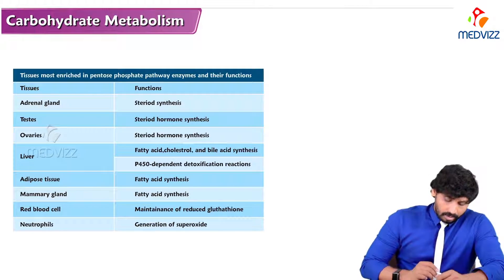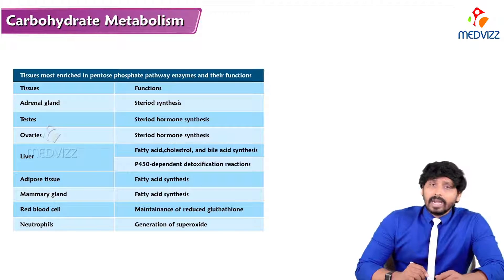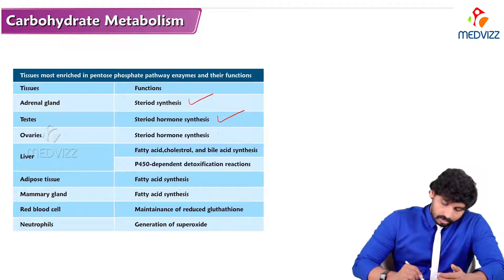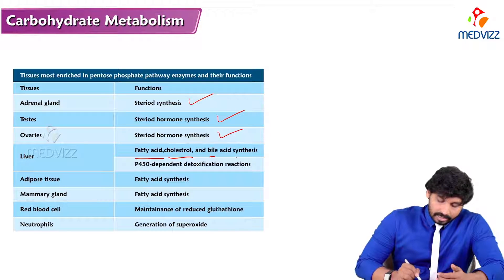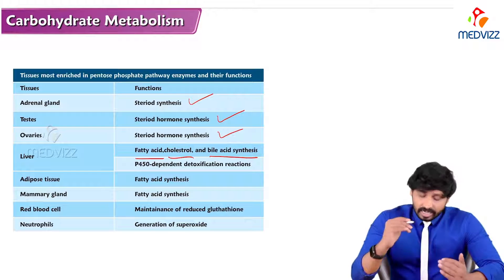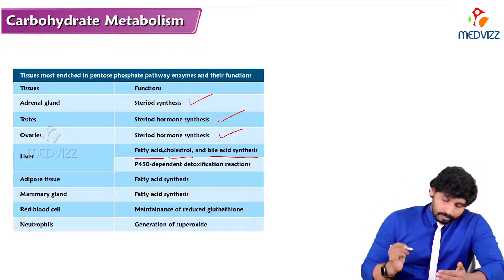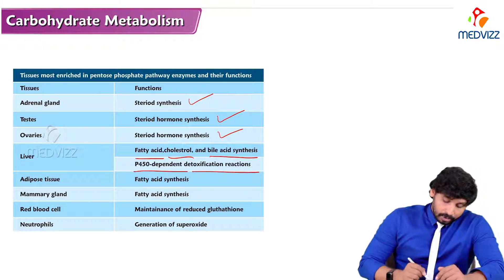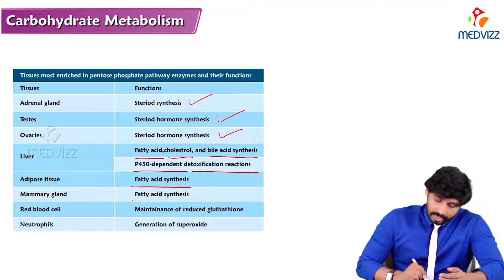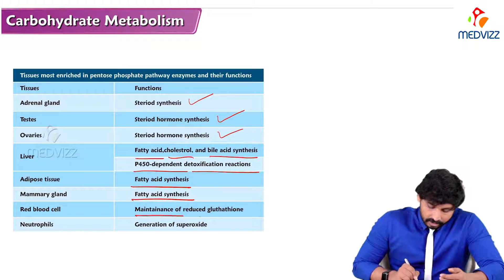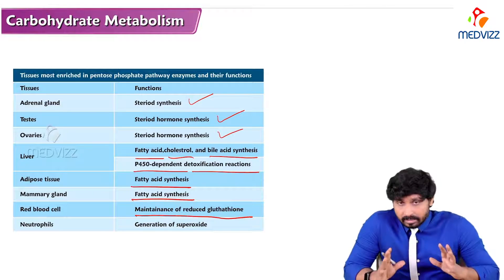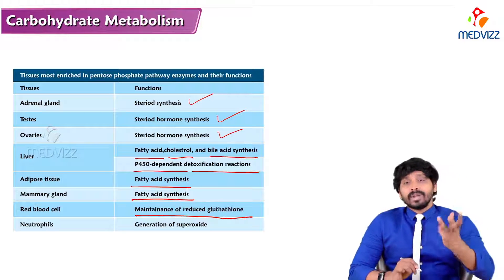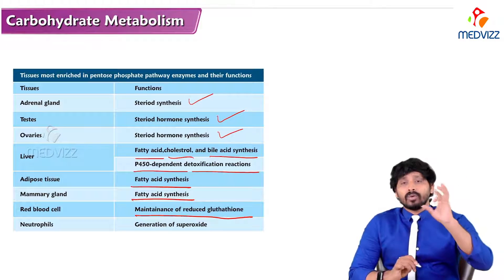HMP shunt is a major pathway in red blood cells, where it produces NADPH and carries out oxidation of glucose without ATP production. The organs and tissues where HMP shunt occurs include: adrenal gland and testes for steroid synthesis, ovaries for steroid synthesis, liver for production of fatty acids, cholesterol, and bile acid synthesis — all requiring NADPH — adipose tissue for fatty acid synthesis providing NADPH, and mammary gland for fatty acid synthesis. Red blood cells use it for maintenance of reduced glutathione.